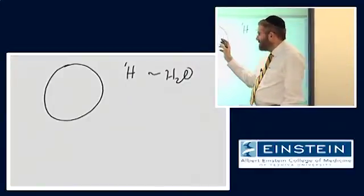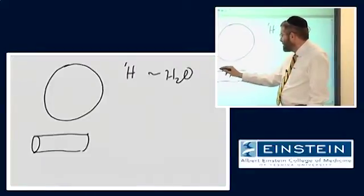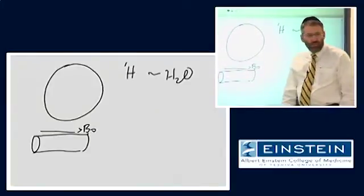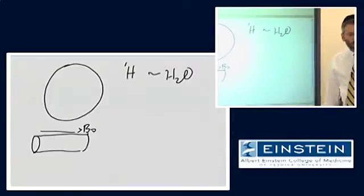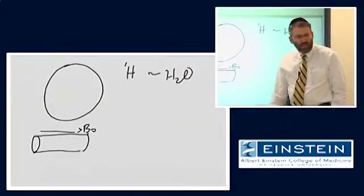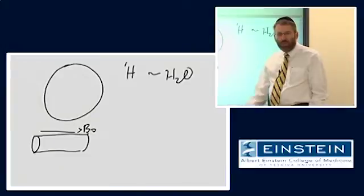We make an assumption when we do imaging that when we put the patient in the scanner, there's a static magnetic field, and that static magnetic field is homogeneous throughout the volume of tissue that we're going to image. We do disturb that homogeneity by turning on gradient magnetic fields to do spatial localization, but we make an assumption that it's perfectly homogeneous.